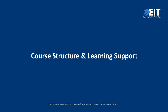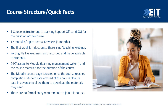I'll quickly go through the course structure for the CIA course, as well as explaining the kind of support you're going to get from us here at EIT — because not everyone has studied online, so we need to reassure you that we're here to support you for the duration of your course. You will have one course instructor and one Learning Support Officer, which would be myself, for the April intake. The course runs over three months and there are 12 topics or modules spread out over those three months.